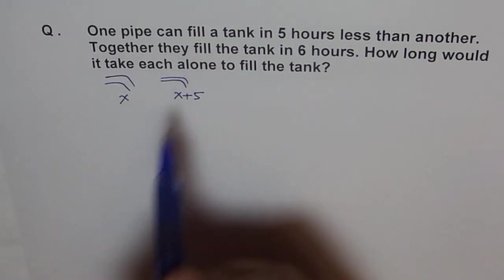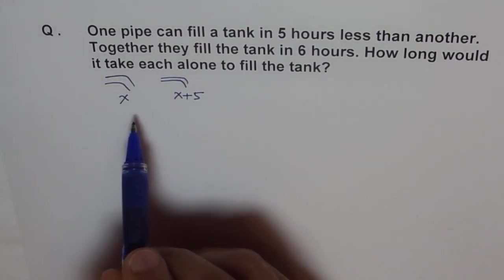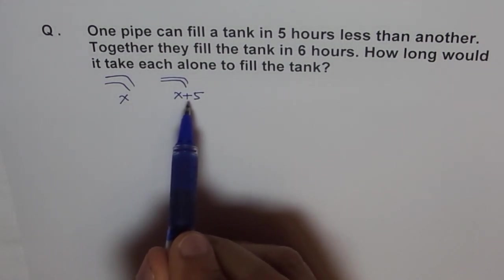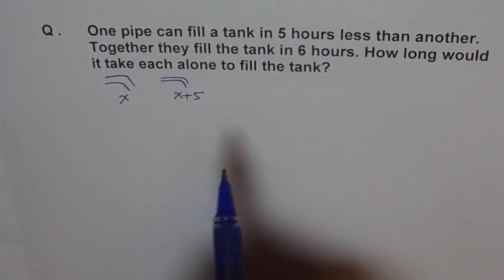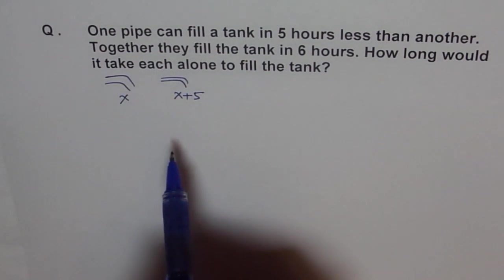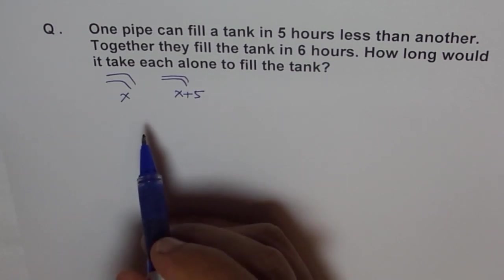Do you understand my concept why I'm writing like this? I'm saying that this is five hours less than this - the other one takes x plus five. Do you understand that's the strategy which I have taken for this. And now I will find with a faster one which takes less time.